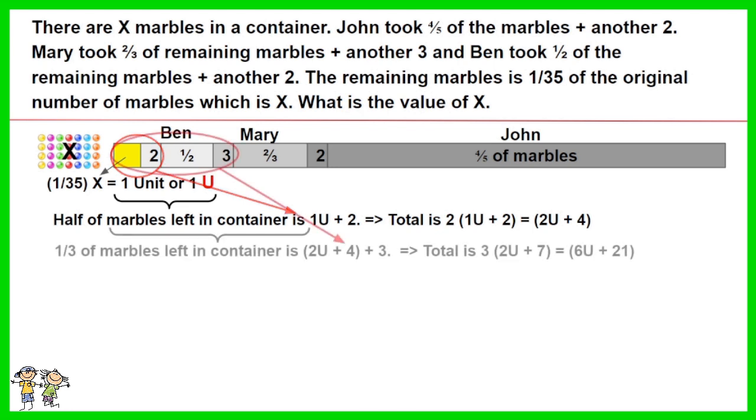One-third of the remaining marbles left for Mary is 2U + 4 + 3. Thus, remaining marbles left for Mary are 3(2U + 7), which is equal to 6U + 21.